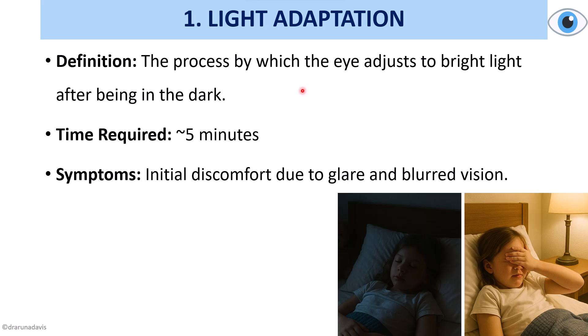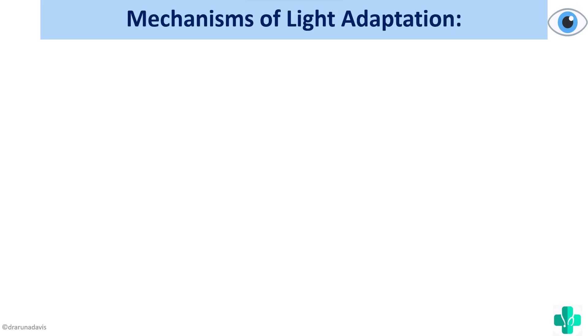Light adaptation is a process by which the eye adjusts to bright light after being in the dark. Suppose we were in the dark and suddenly entered bright light — we would have an initial discomfort due to glare and blurred vision, which will be recovered within five minutes. That is called light adaptation.